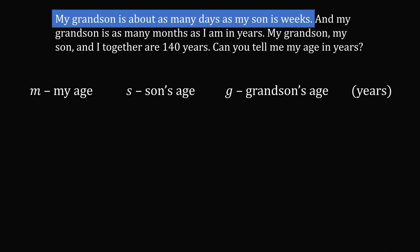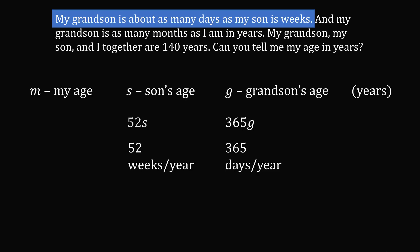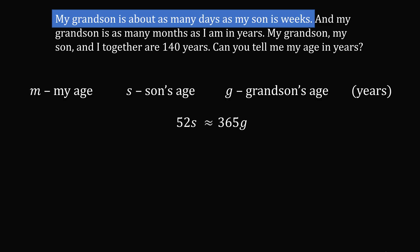My grandson is about as many days as my son is weeks. There are 365 days in a year. So if you take g and multiply it by 365, you get about the number of days of the grandson's age — so this will be 365g. Similarly, there are 52 weeks in a year, so if we multiply s by 52, we get the son's age in weeks. So 52s is approximately equal to 365g.